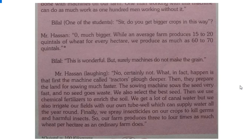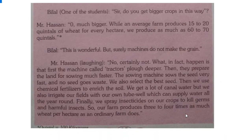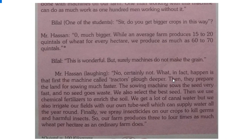They also use chemical fertilizers to enrich the soil. They have canal water and tube wells, so the supply of water is plentiful throughout the year. When crops are affected by pests, they use insecticides to kill germs and harmful insects. This is why they produce three to four times more than an average farm.